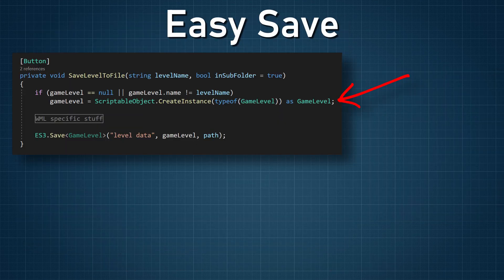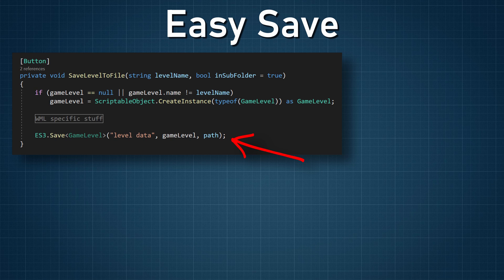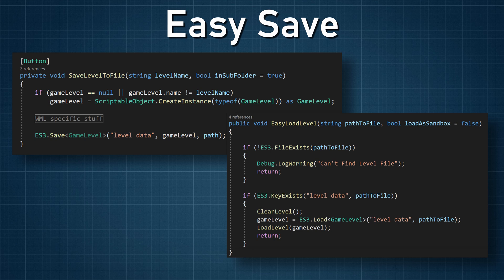Once the custom type has been added, it's simply a matter of creating an instance of the GameLevel scriptable object at runtime — this won't create a project asset — then populating the fields of that scriptable object with the correct data. With the fields populated, in one line we can save the game level data to a file of our choosing. To load the data back, we check if the save file exists — if not, we stop to avoid an error. If it does exist, we check for the key that saved all the level data, which I call 'level data'. If that key exists, we clear the current level, load the data into an instance of a GameLevel scriptable object, then call the same load level function with that game level instance as an input parameter.